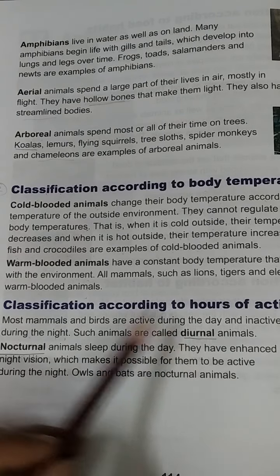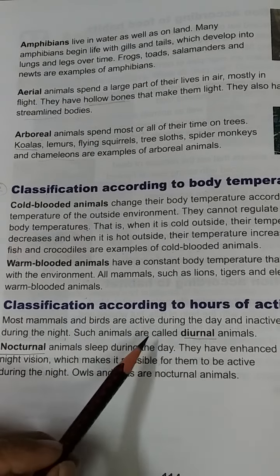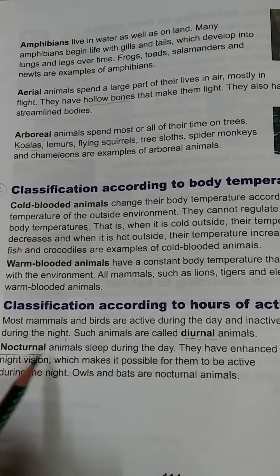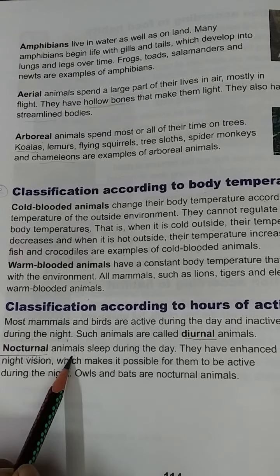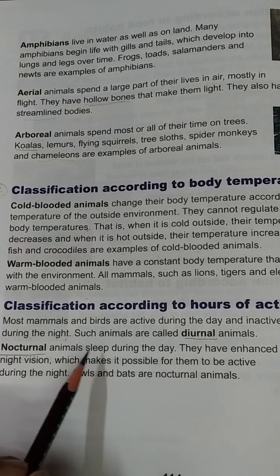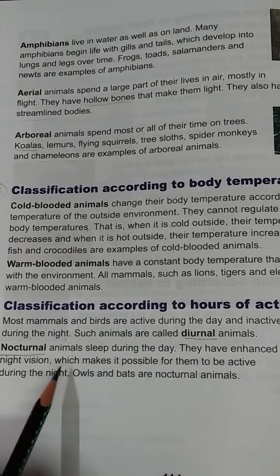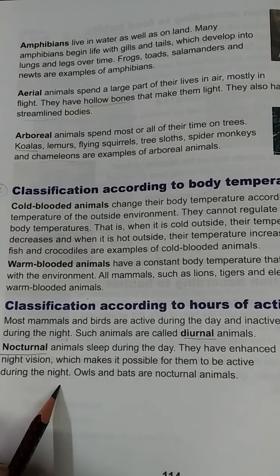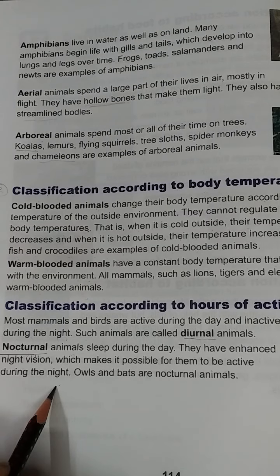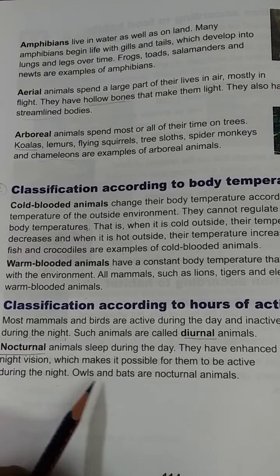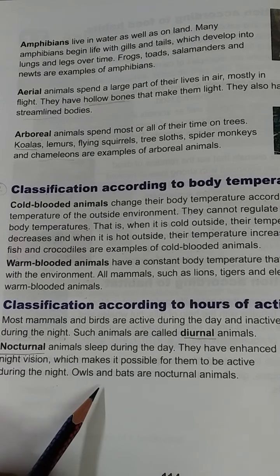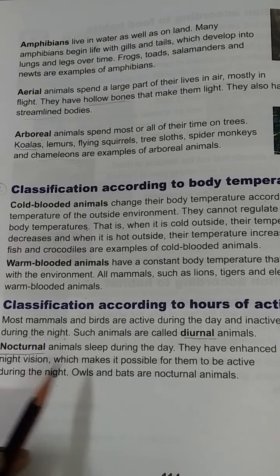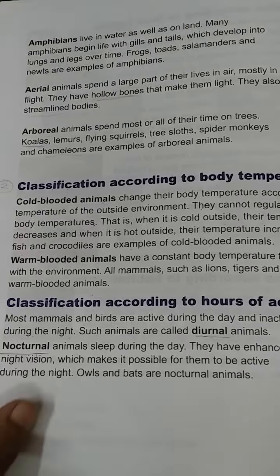Most mammals and birds are active during the day and inactive during the night — such animals are called diurnal animals. Nocturnal animals sleep during the day. They have enhanced night vision, which makes it possible for them to be active during the night. Examples of nocturnal animals are owls and bats.